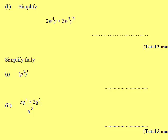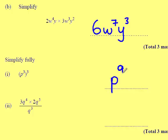Part B — very similar to one of the earlier questions. Multiply each component by its corresponding number: 2 times 3 is 6. That's a W, not an X. W to the power of 4 multiplied by W cubed is W to the power of 7, because I add them. And Y times Y squared will be Y cubed. Simplify P cubed, all cubed — I multiply the numbers — giving me P to the power of 9.